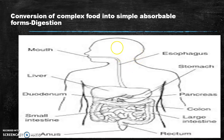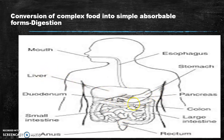The food pipe is called the esophagus and it leads to the stomach. The stomach is continued by the small intestine and large intestine. After the large intestine, we have the rectum where all excretory particles are stored, and then they are excreted through the anus. The pancreas and liver are beside the stomach and also help in digestion.